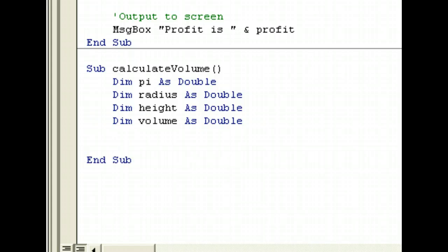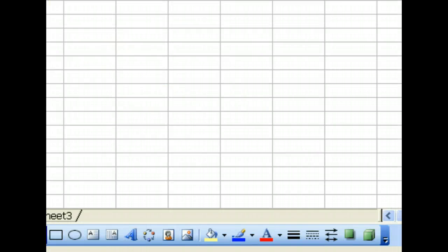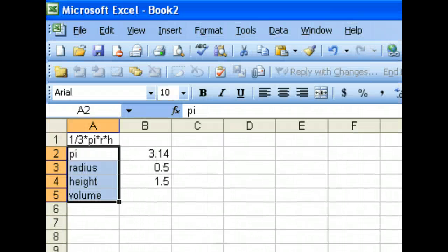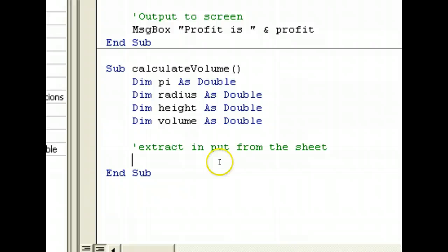So, what we need to do now is we first need to extract input from the sheet. In this case, our sheet is Sheet1. So, what we need to do first is we need to set this sheet as active sheet. The active sheet in which we get the data from. To do that, do Sheets, give it the name, Sheet1.Select.